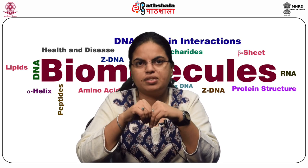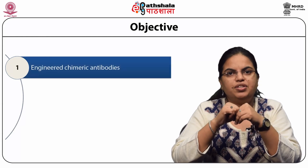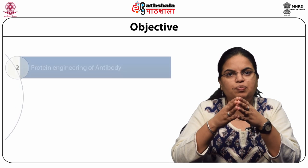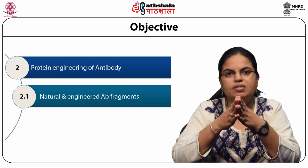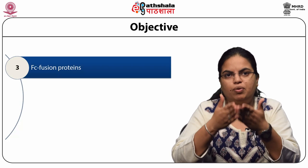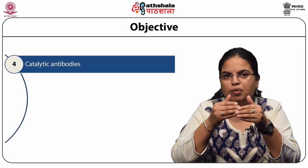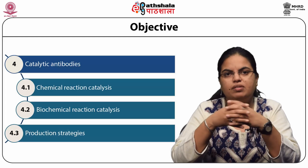The objectives of this module are: first, to study engineering of chimeric antibodies, rational approaches to humanization, and empirical approaches to humanization. Second, protein engineering of antibody involving natural and engineered antibody fragments and the antigen combining site. Third, FC fusion proteins, effector function enhancement strategies, and effector function diminution strategies. Fourth, to discuss catalytic antibodies, their chemical reaction catalysis, biochemical reaction catalysis, and their production strategies.